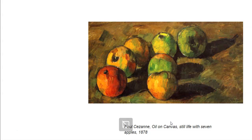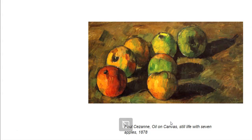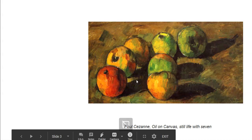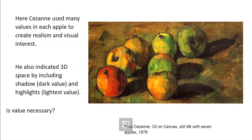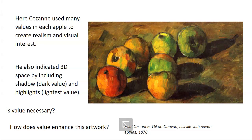This is by Paul Cézanne, an artist that we really did study a lot in second grade. He likes to make still lifes using blended color and showing a lot of 3D objects using value. Cézanne used many different values in each apple to create realism and visual interest, and he also created 3D space by including shadow, which is a dark value, and highlights, which is the lightest value. Do you think that value is necessary in art? How do you think value enhances this particular artwork? Would it be different if there was no value — if it was all the same tone or the same value of color?